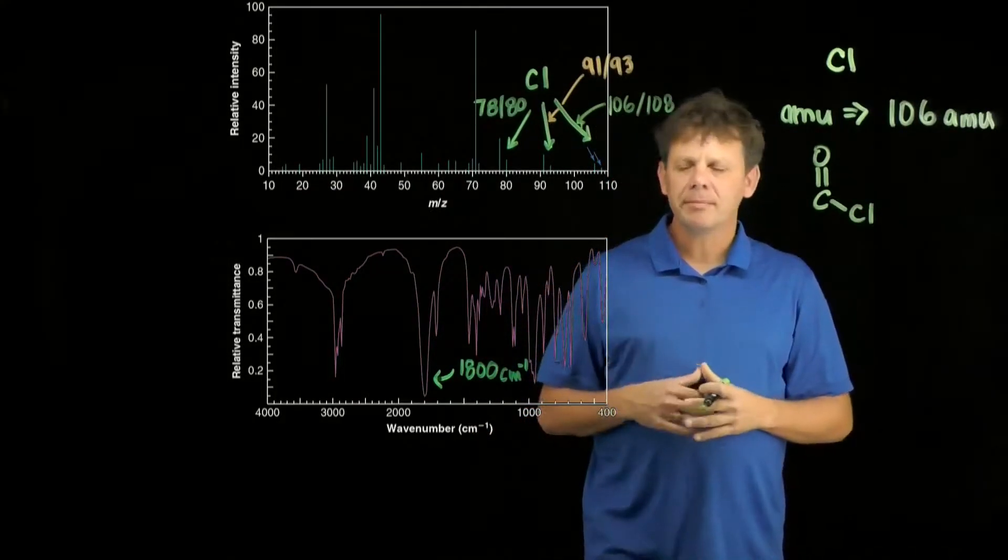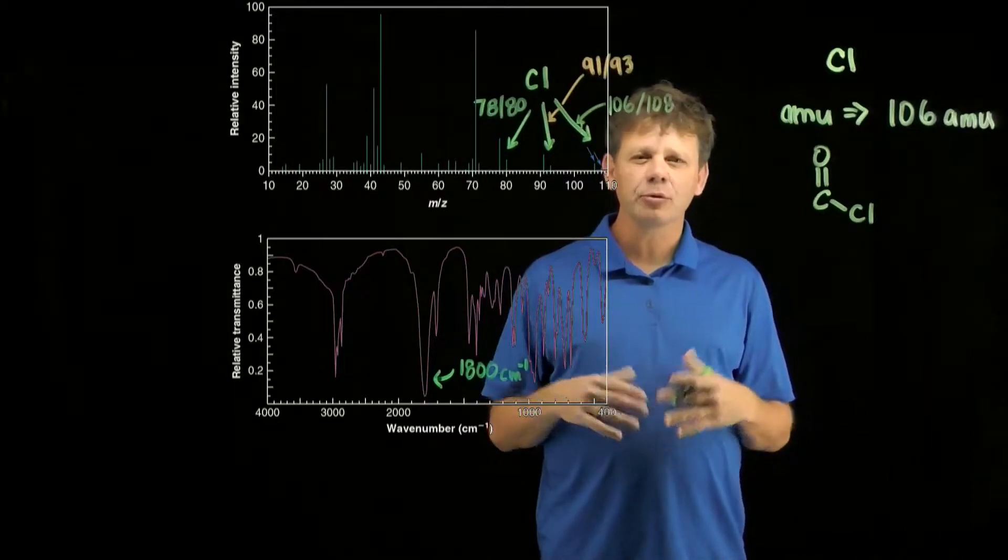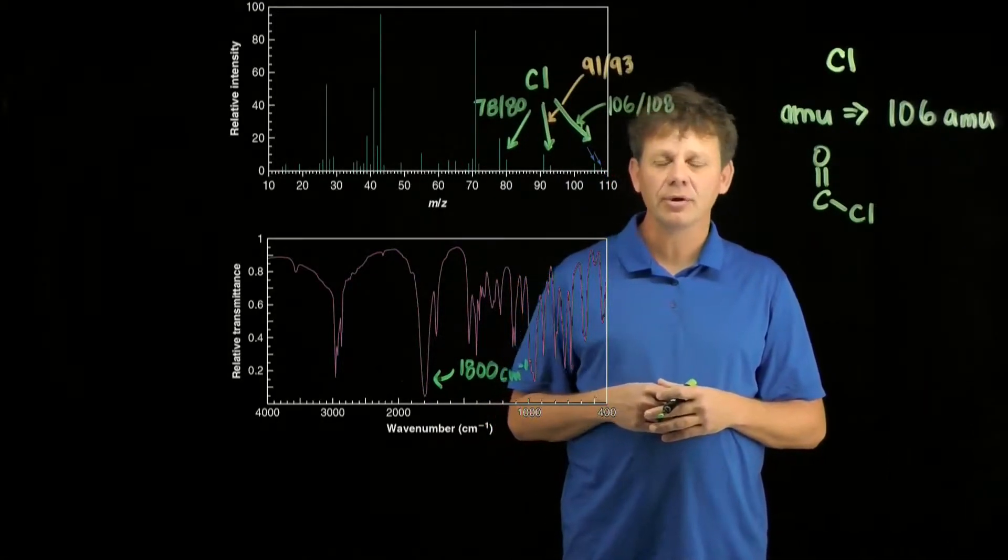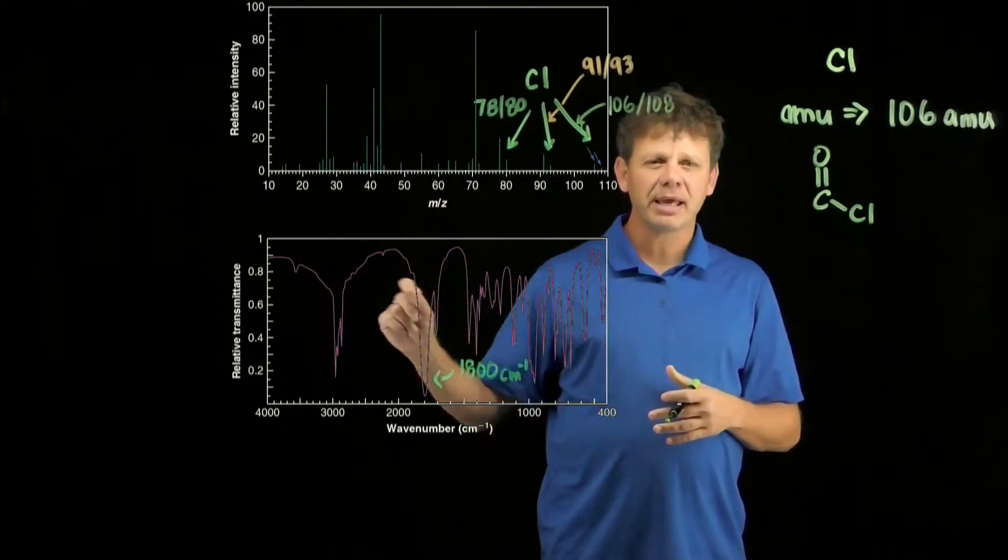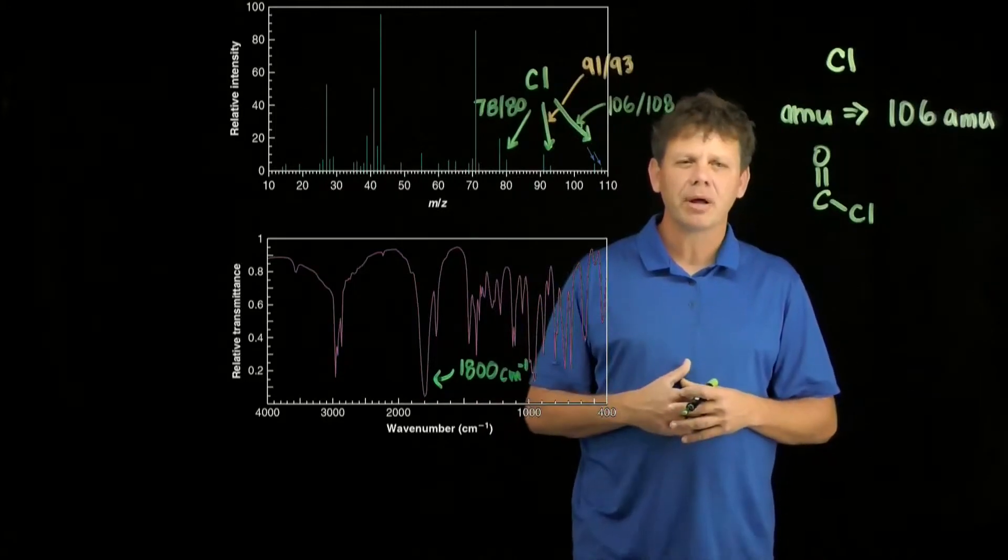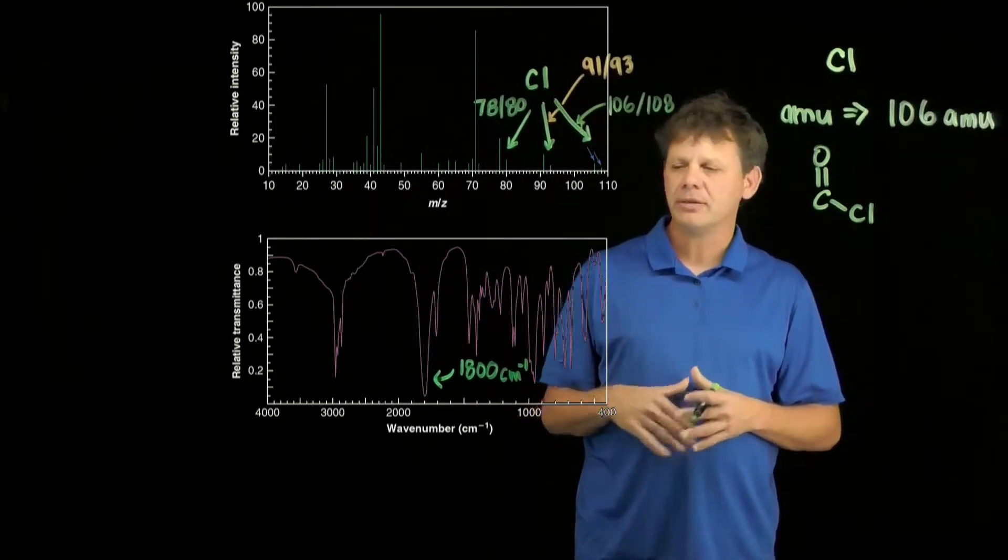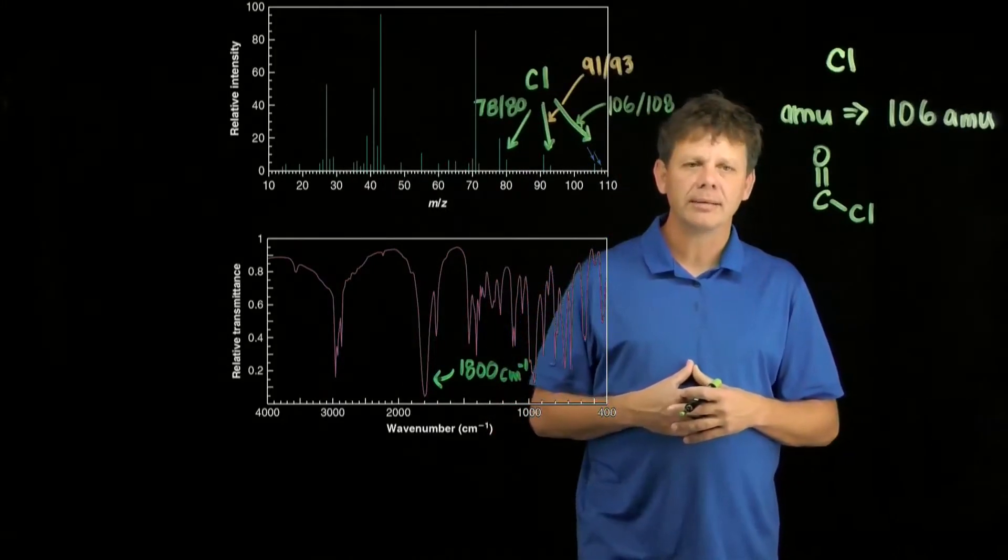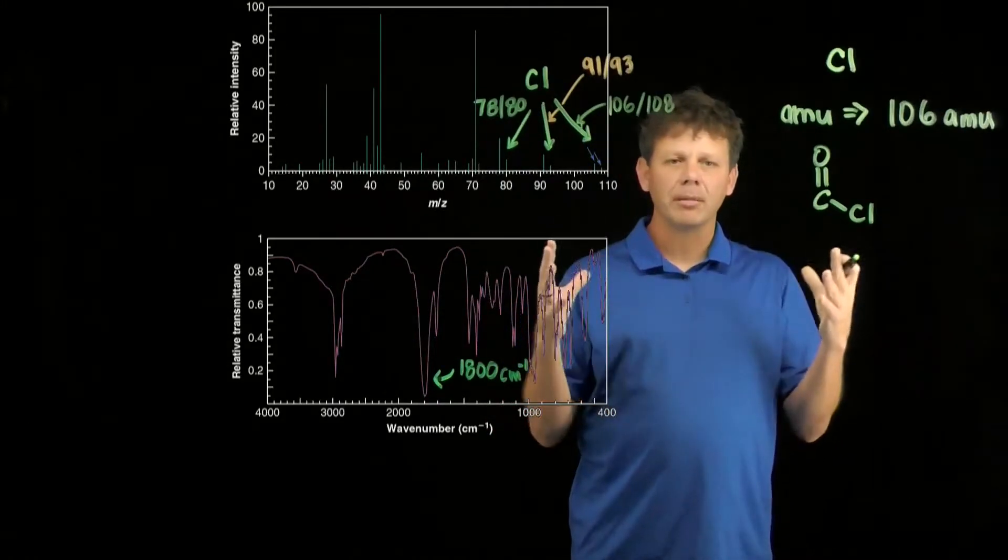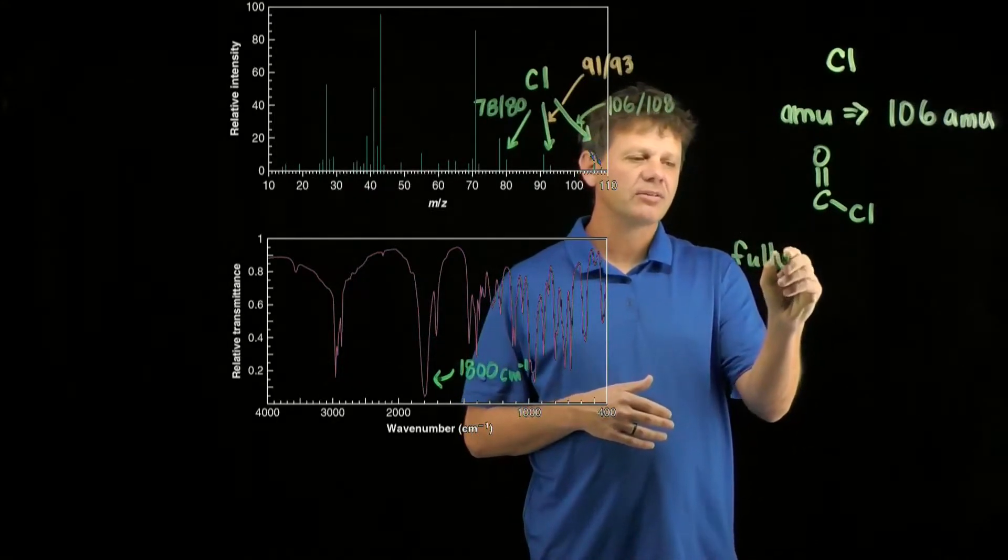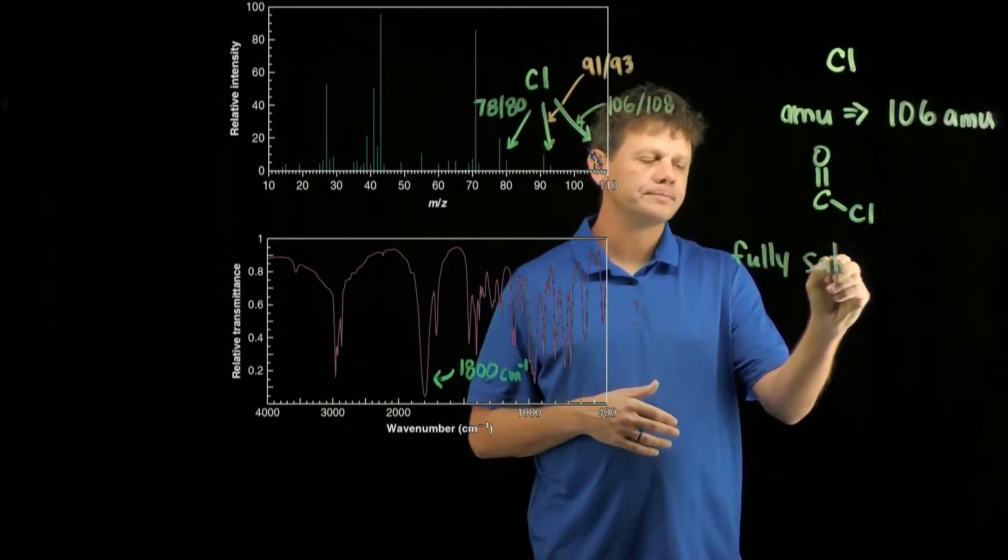The rest of what the IR spectrum tells us is what's not there. We don't see an alkene around 1600, we don't see a CH band around 3100. So we kind of believe that the rest of the molecule is fully saturated. There's nothing in the IR to indicate the presence of an aromatic ring.